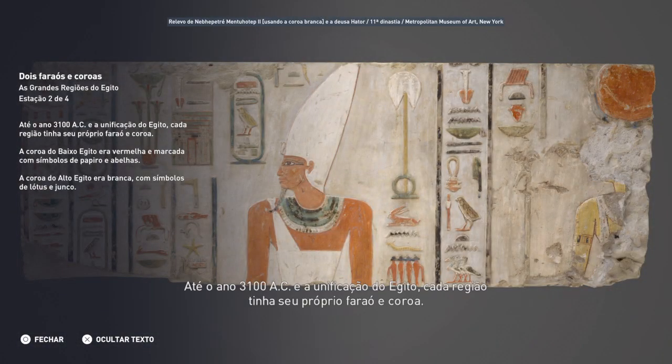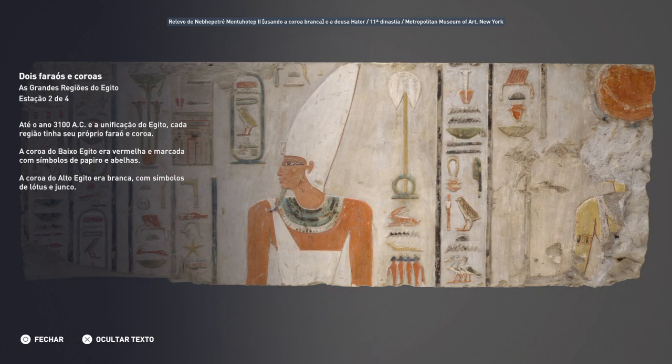Até o ano 3100 a.C. e a unificação do Egito, cada região tinha seu próprio faraó e coroa. A coroa do Baixo Egito era vermelha e marcada com símbolos de papiro e abelhas. A coroa do Alto Egito era branca, com símbolos de lótus e junco.